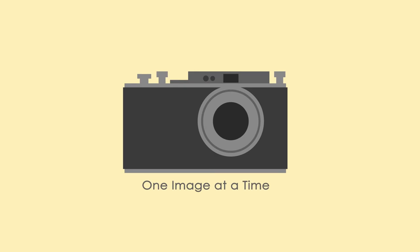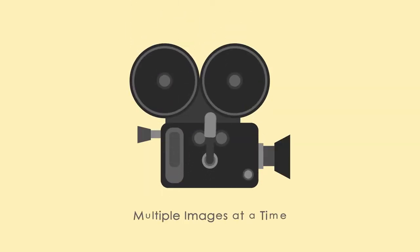Then motion picture cameras came along. Same principle, but instead of taking one frame or picture, now an apparatus was created to speed the chemically treated surface — the film — through the housing, enabling the taking of many pictures each second. This was started first by hand cranking the film through, resulting in variable speed.